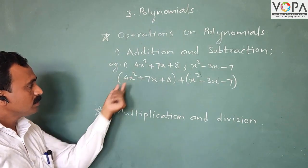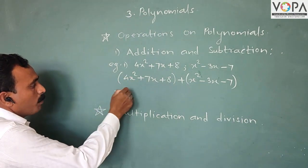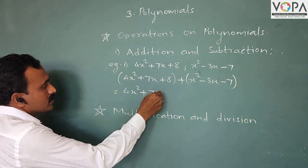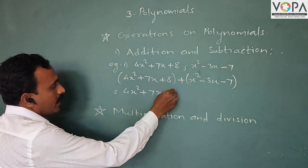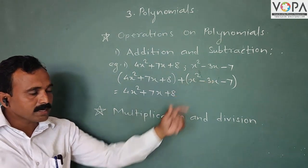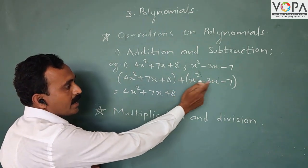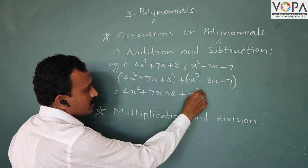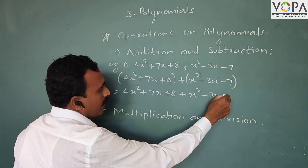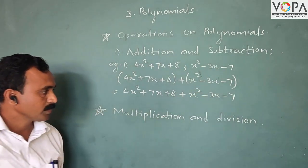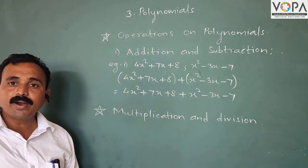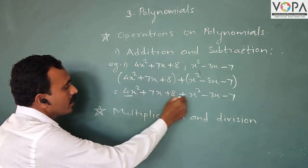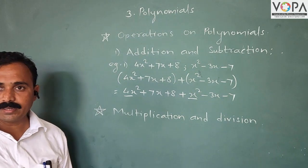In the first step, open the bracket: 4x² + 7x + 8. Now open the second bracket. Here plus sign remains as it is: + x² - 3x - 7. Now identify the like terms. 4x² and x² are like terms.